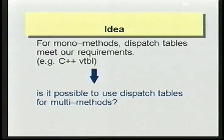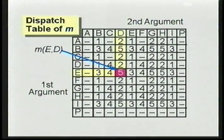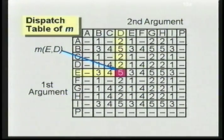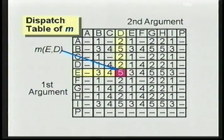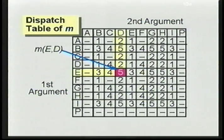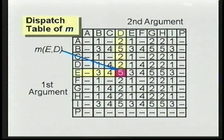The answer is yes. Here you have the dispatch table of generic function M. It's a two-dimensional array, one dimension for each argument, indexed by the types of the type hierarchy. If you want to find the method corresponding to an invocation like M invoked with two arguments of type E and D, you look at the row of E, the first argument, and the column of D, the second argument, and at the intersection you have a pointer to the corresponding method — in this case, M5.